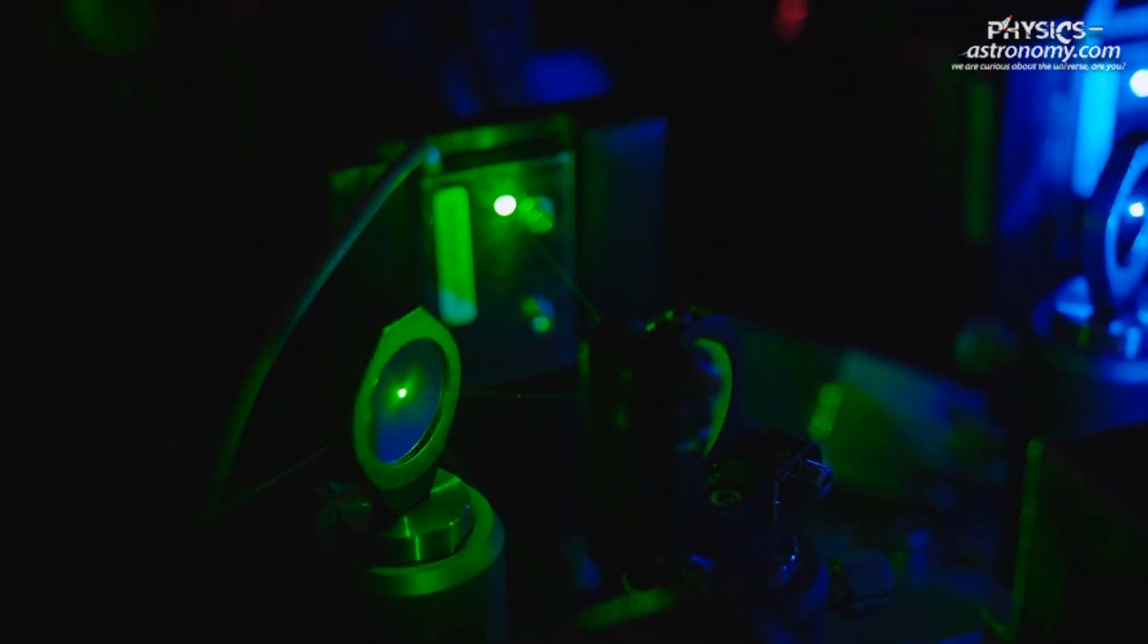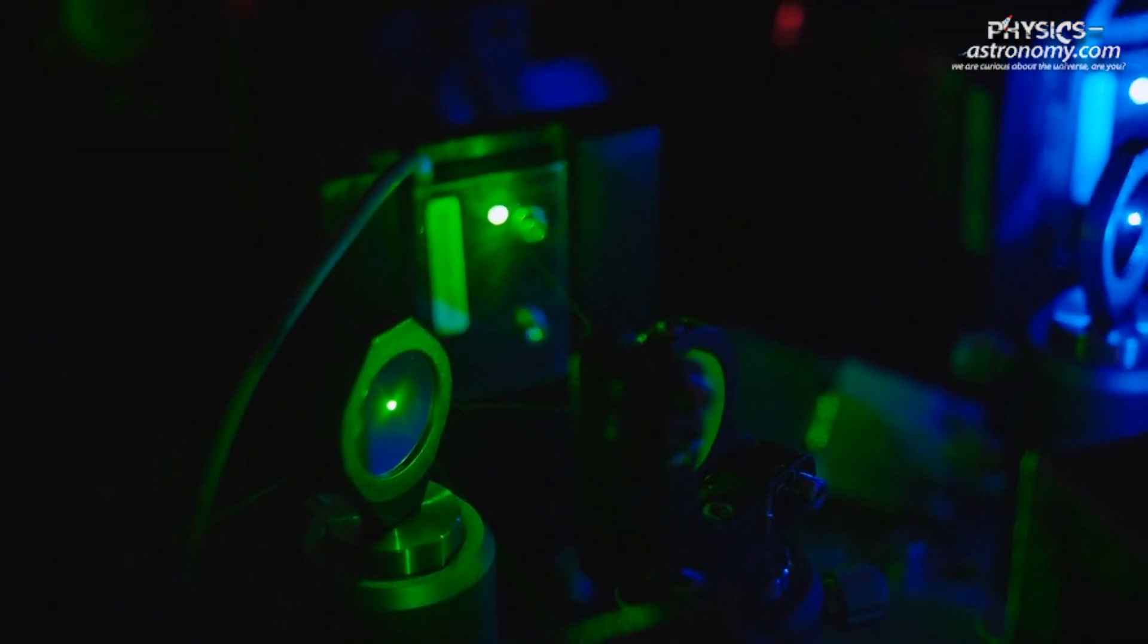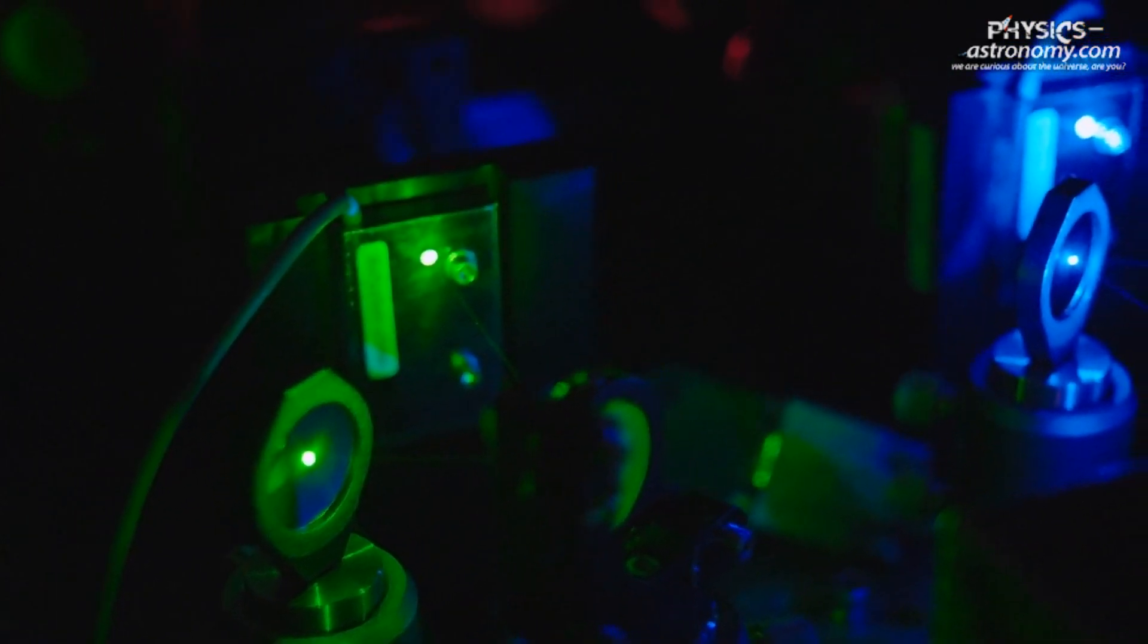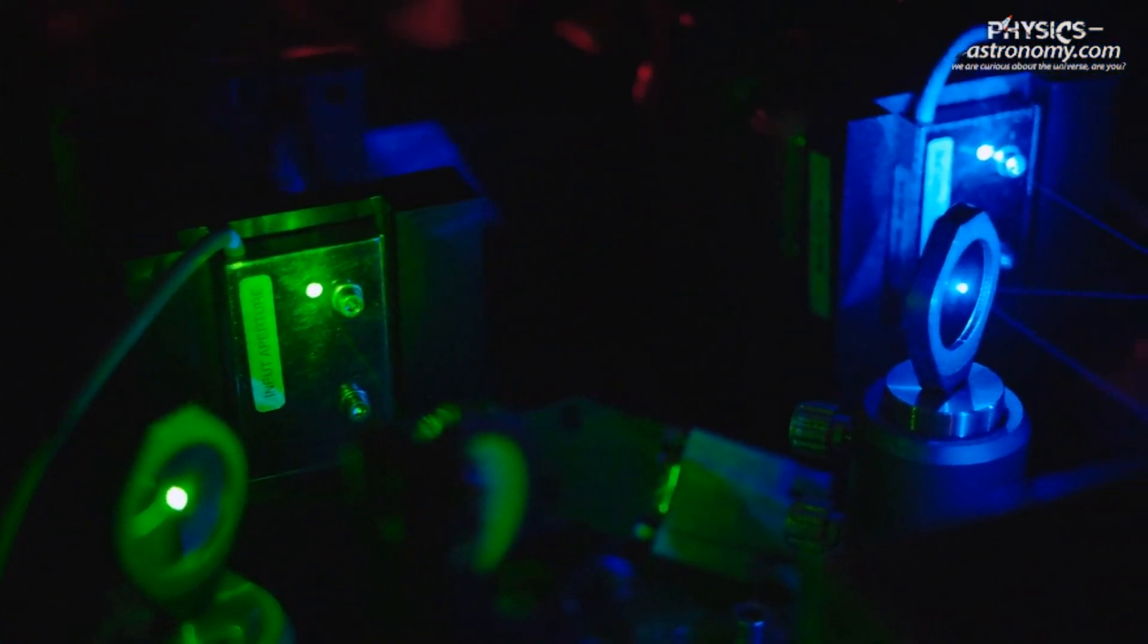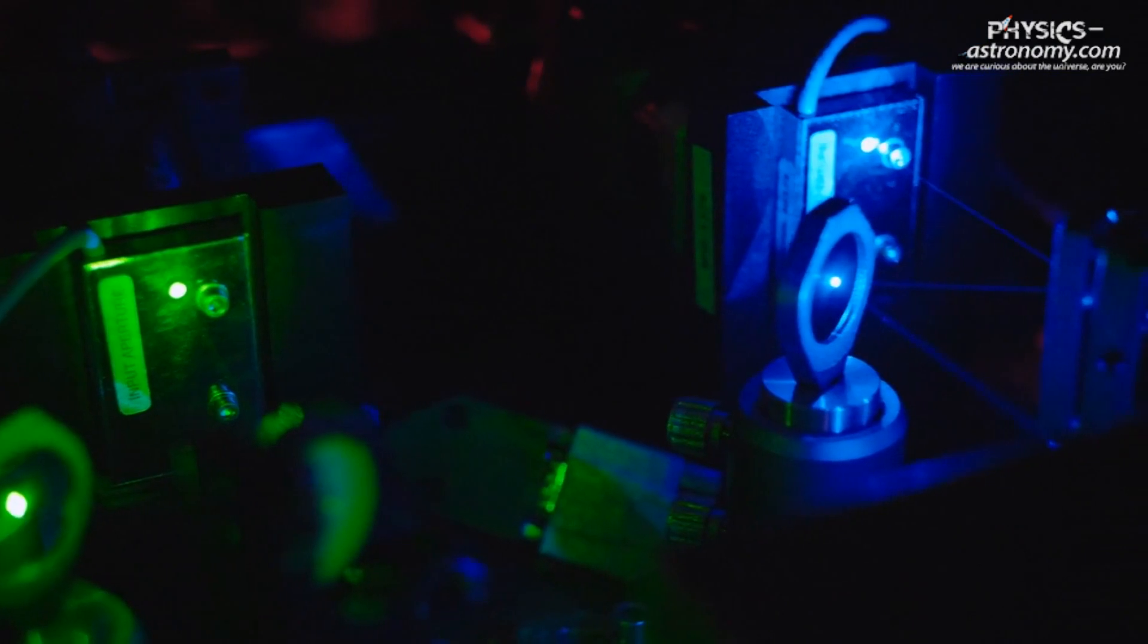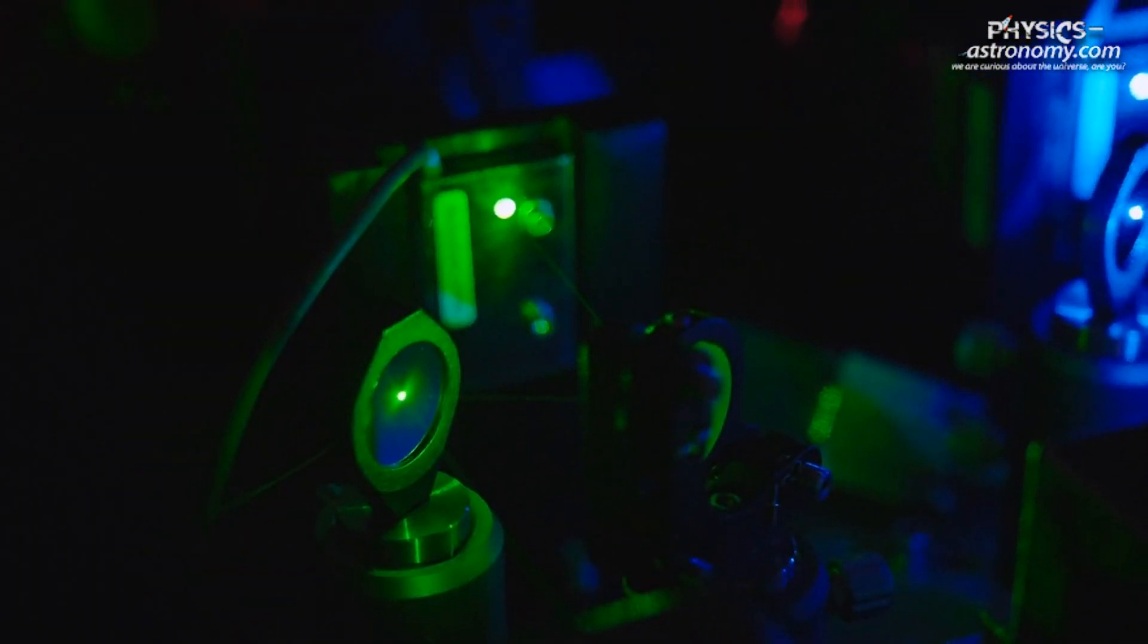During the experiment, researchers used a combination of magnetic fields and laser cooling techniques to cool rubidium atoms to extremely low temperatures, just a few billionths of a degree above absolute zero.